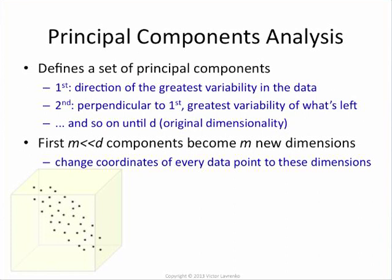Principal components analysis, called PCA, defines a new set of dimensions. The way it does that is it takes your data set and first looks for the direction in that data set — it tries to draw a line such that along that line you have the greatest amount of variance in the data, so the data points are spread out as far as possible. And the line it picks is not necessarily the X, Y, or depth — it could be any line in this space.